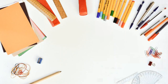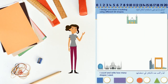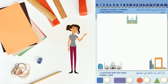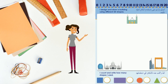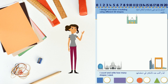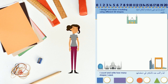Now, kids, it's your turn. Design a building using 2D shapes. You can draw it or cut out shapes from paper or other materials. Don't forget to count how many shapes you used to make the building. Then upload your work in LMS.